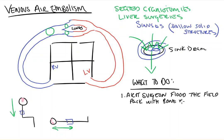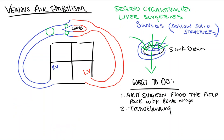Next, we're going to tell the surgeon that we're going to put the patient into Trendelenburg — head down. Same concept: we want to try to decrease the gradient between the brain and the heart. If we can position the patient so the heart and brain are reversed, gravity is actually helping you so that more air doesn't get into the sinus, and some air may even be able to flow backwards by gravity.